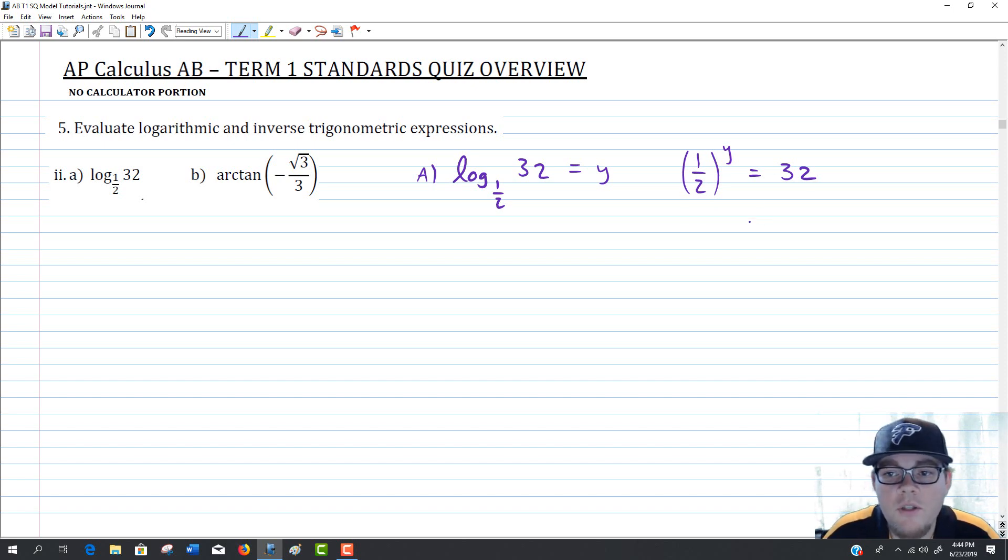What I notice is that I know 32 is 2 to the 5th power. And I know that 1 half is 2 to the negative 1 power. So if I rewrite my equation, I'll get 2 to the negative y power is equal to 2 to the 5th. Now you can imagine we could log base 2 both sides. When we do, we get negative y equals 5, or y equals negative 5. So the value we are looking for, log base 1 half of 32, is going to be negative 5. That should make sense, because if it was just log base 2 of 32, it would be positive 5. Since it's 1 half, we have something flipped, so we need a negative sign to unflip it.